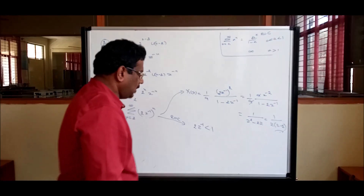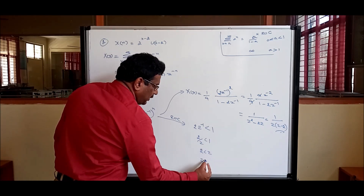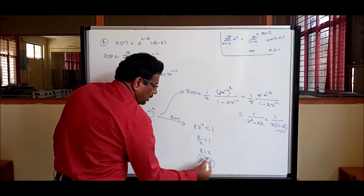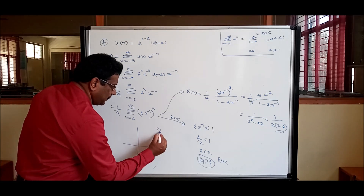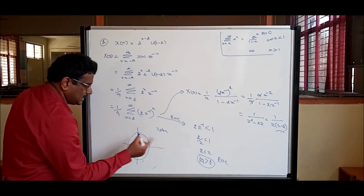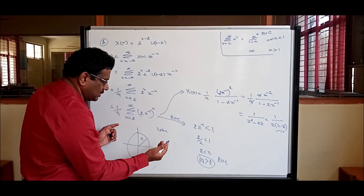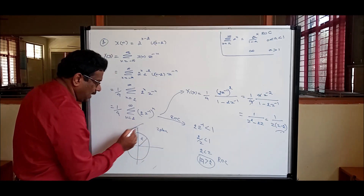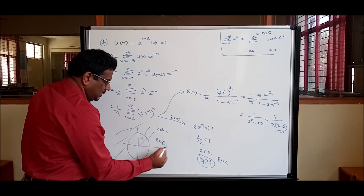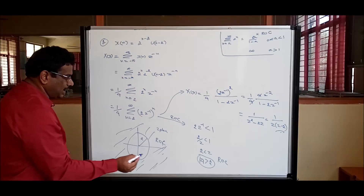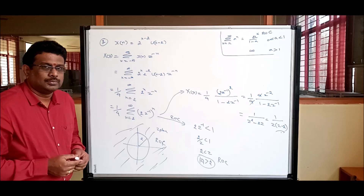The final answer for Problem 2 is X(z) = 1/(z(z-2)), ROC: |z| > 2. Greater than means outside the circle. Draw the z-plane with a circle of radius 2; the ROC is the region outside this circle. In that region, taking any value of z and substituting into the formula, the sequence converges.